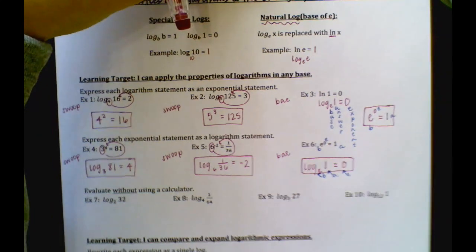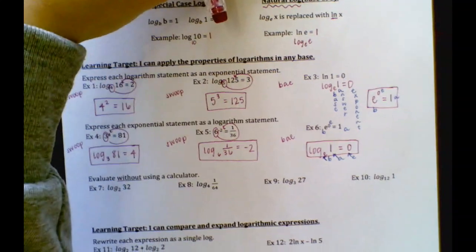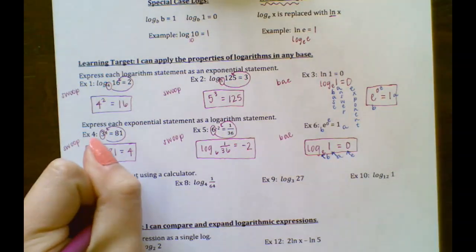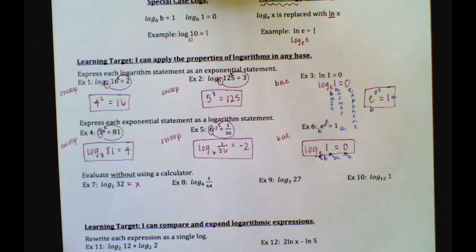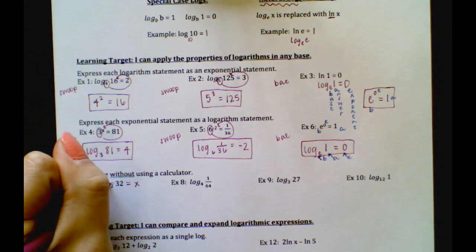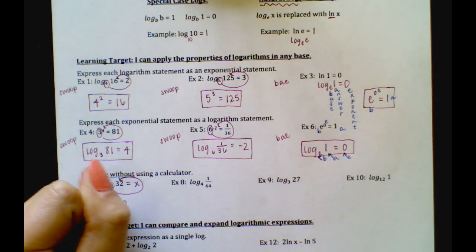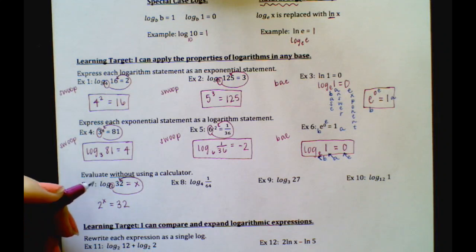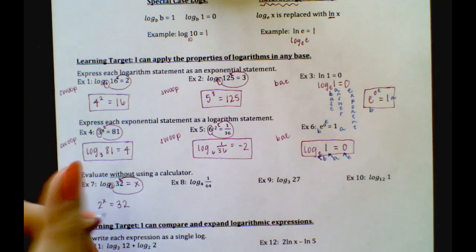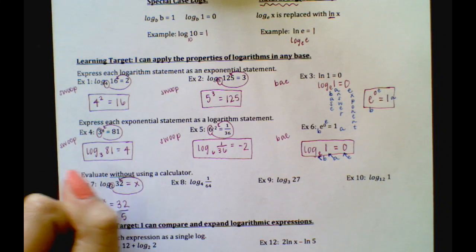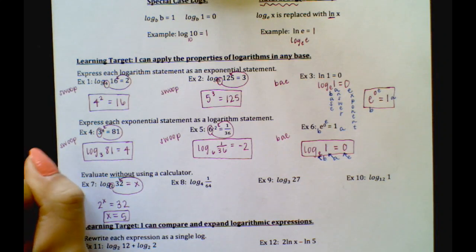Examples 7 through 10: evaluate without using a calculator. All we do is set these equal to x, then use the swoop or BAY method to solve for x. Using the swoop: we have 2 to the x power equals 32. How many times do we need to multiply 2 by itself to get 32? That's 5 — 2 to the 5th power is 32.